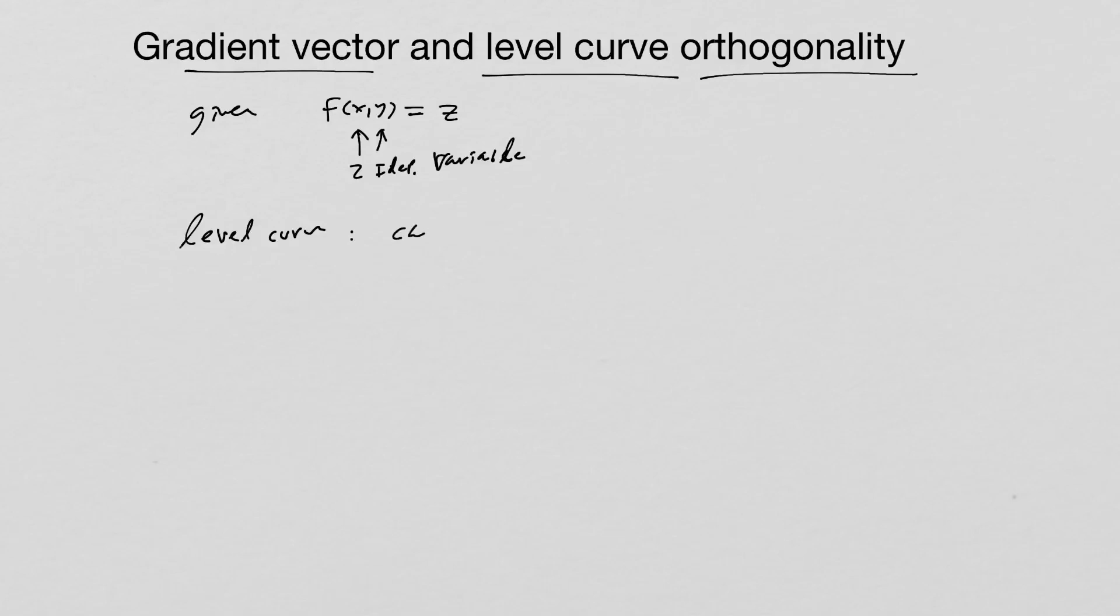What we're going to do is choose some c value, just some number. We're going to set f(x,y) equal to c. And then the goal is to find x,y points such that f(x,y) is equal to c. These points form a level curve.